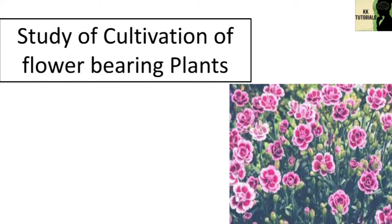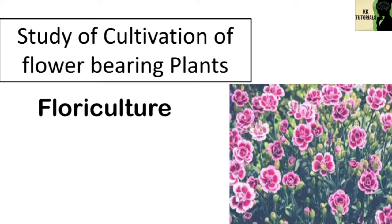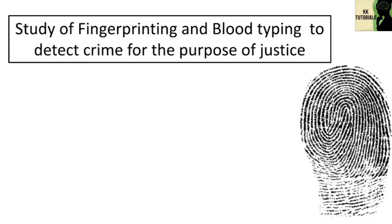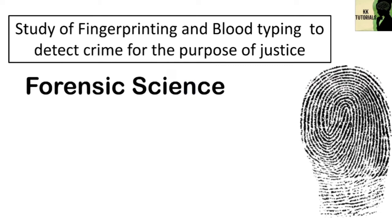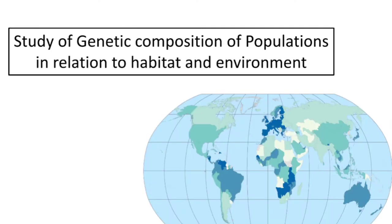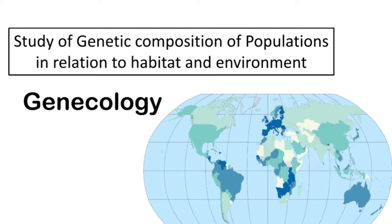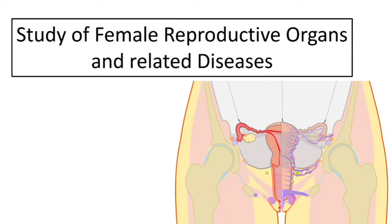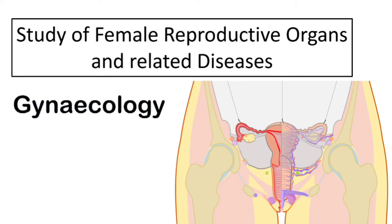The study of cultivation of flower-bearing plants is called floriculture. The study of fingerprinting and blood typing to detect crime for the purpose of justice is called forensic science. The study of genetic composition of populations in relation to habitat and environment is called gynecology. The study of female reproductive organs and related diseases is also called gynecology.